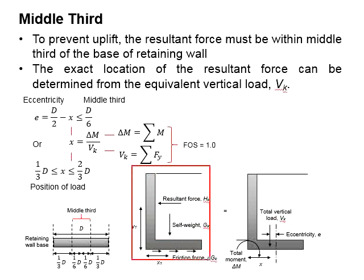This figure shows the forces acting on a retaining wall. The resultant force multiplied by the lever arm will give you the overturning moment. The self-weight multiplied by the lever arm will give you the resisting moment to overturning.